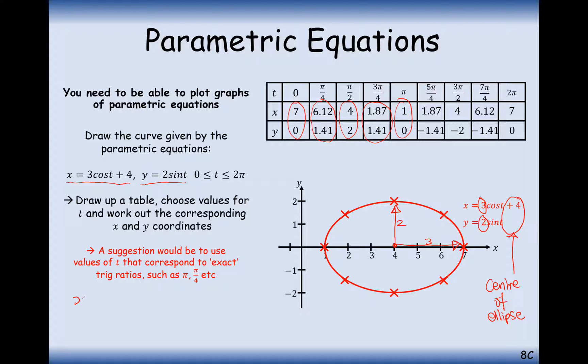So effectively, what you could say then, to summarize, is that if x equals a cos t plus b and y equals c sine t plus d.